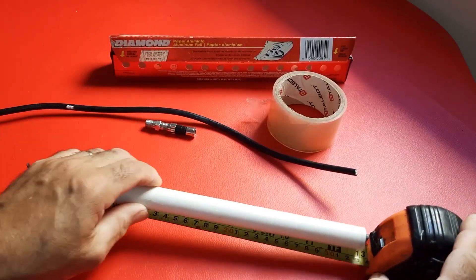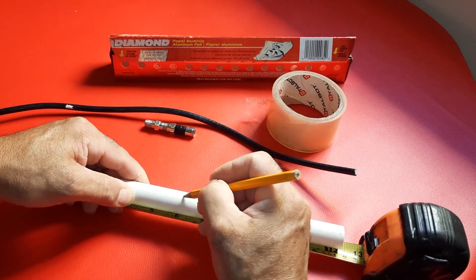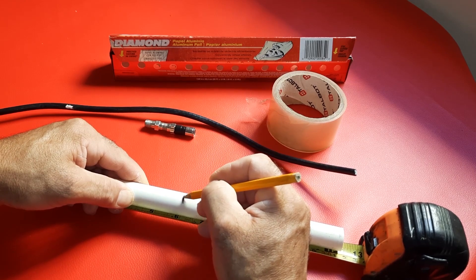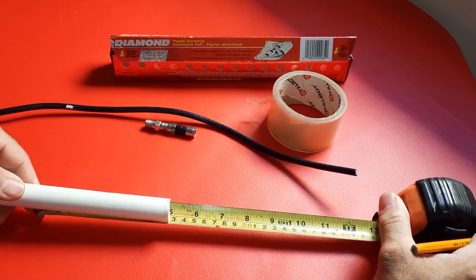Steps to make the antenna. 1. Cut the PVC pipe into a 12-inch long piece. Then, mark the center at 6 inches, and next, mark 5 1⁄2 inches on each end.